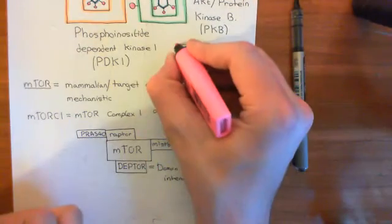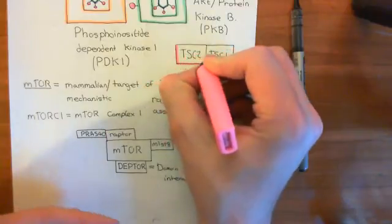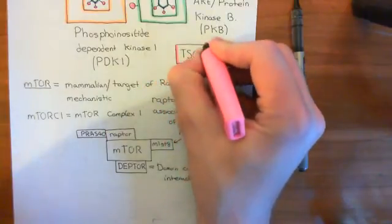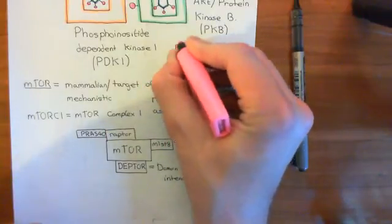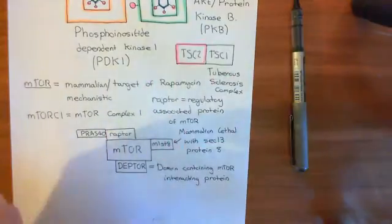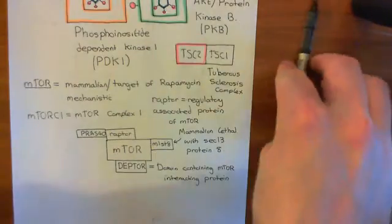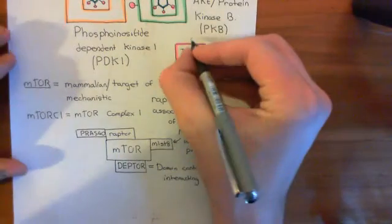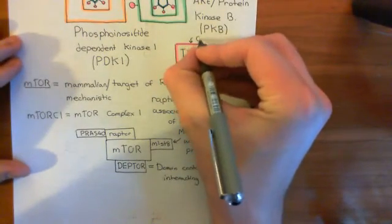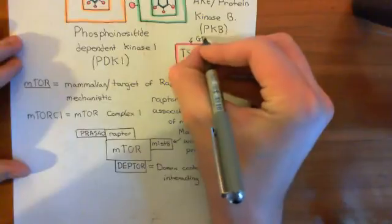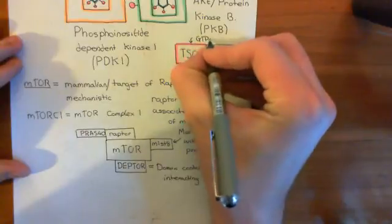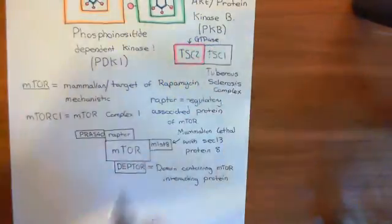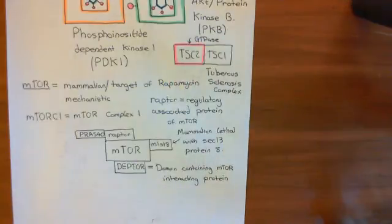The important one is TSC2. When TSC2 is in this complex with TSC1, it's an active GTPase. So this enzyme is an active GTPase, which means that it breaks GTP down into GDP and inorganic phosphate.